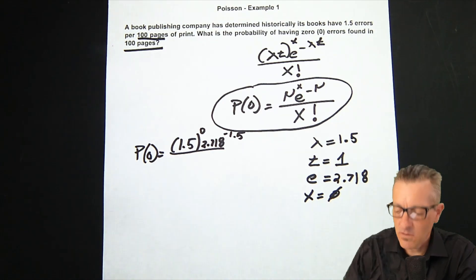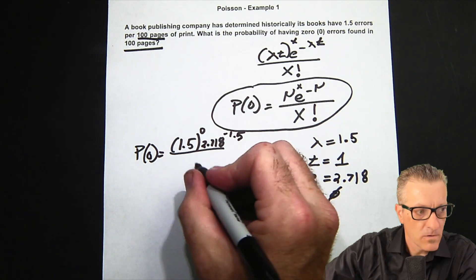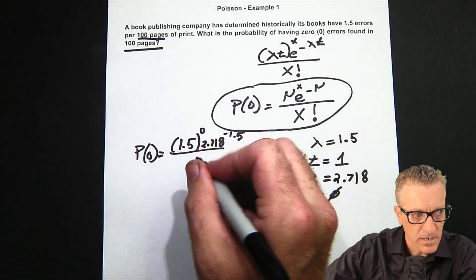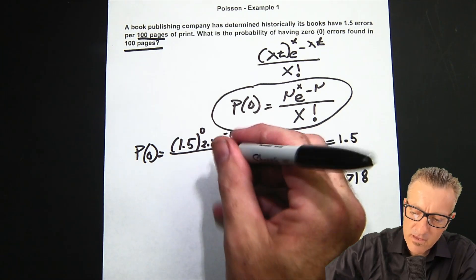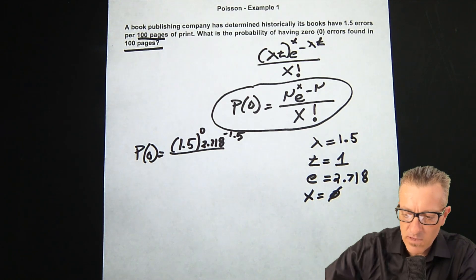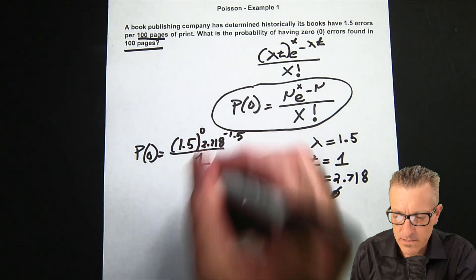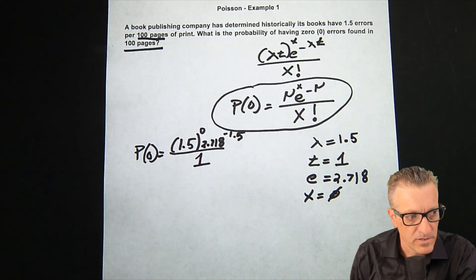It's a little zero up there, and then 2.718 to the negative 1.5—kind of ran out of space, but it's showing up okay on the camera. Below we're looking for our X. When we work out zero factorial, it ends up being one.